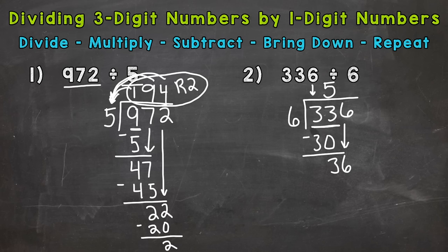So 36 divided by 6. How many whole groups of 6 out of 36? You can think of your 6 facts, multiplication facts if that helps. And we get 6 whole groups. That hits 36 exactly. So multiply. Six times 6 is 36. We subtract.